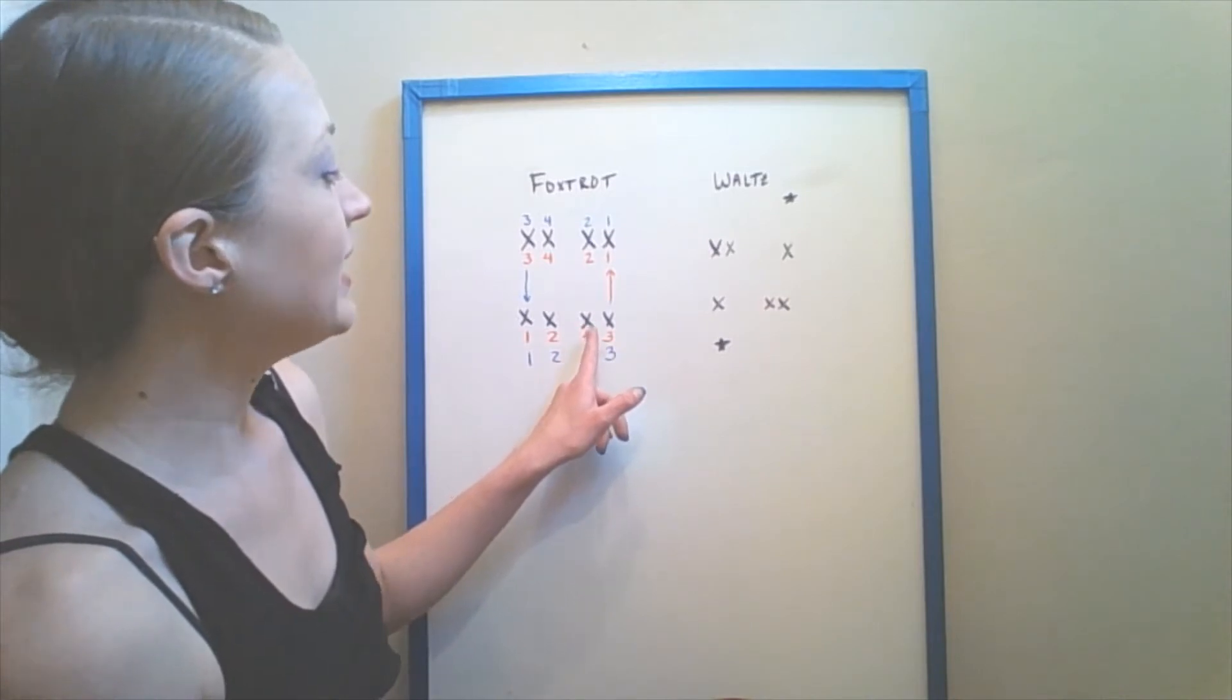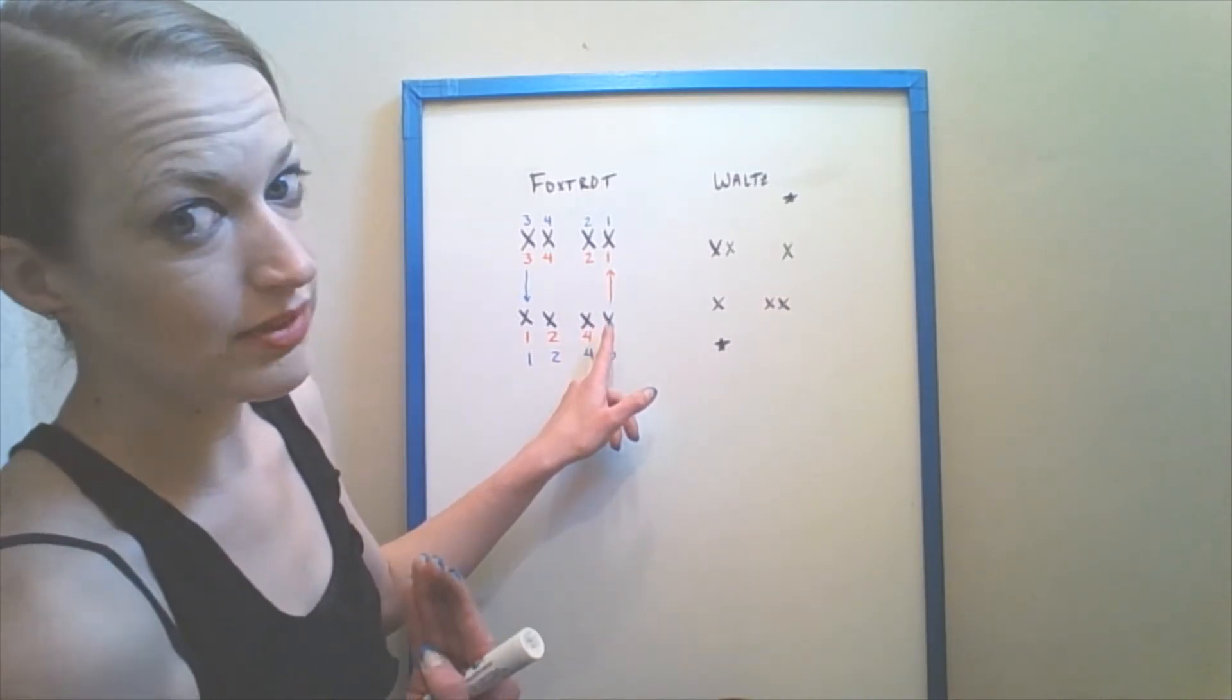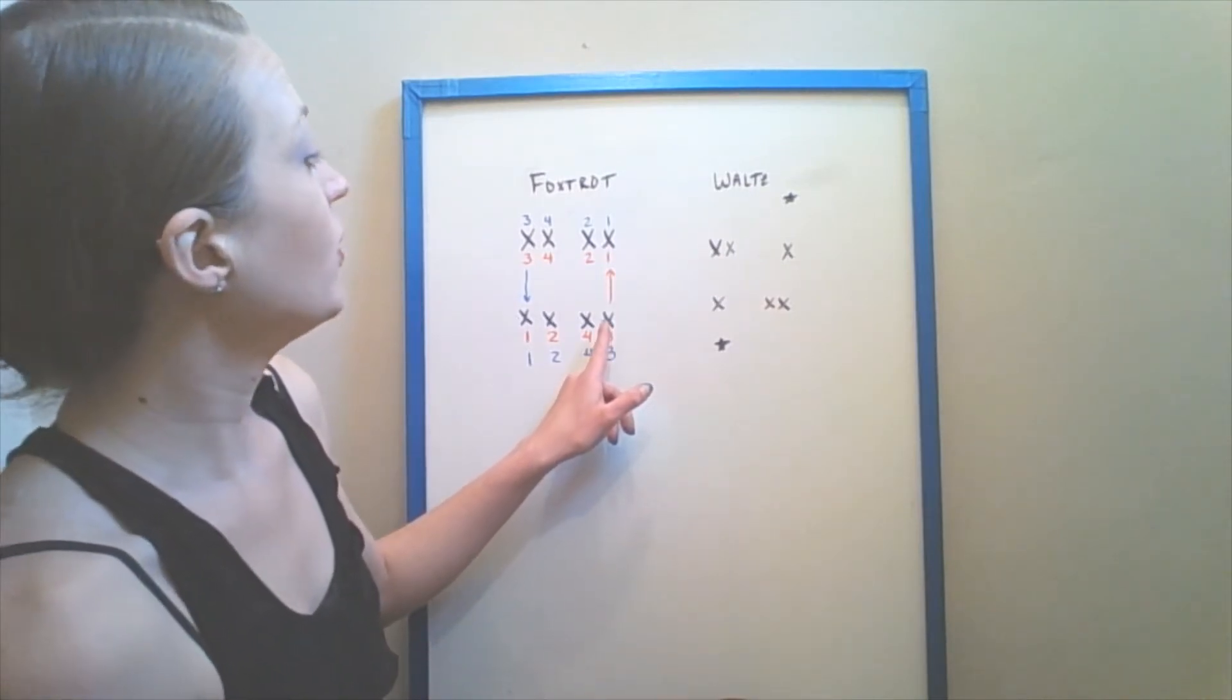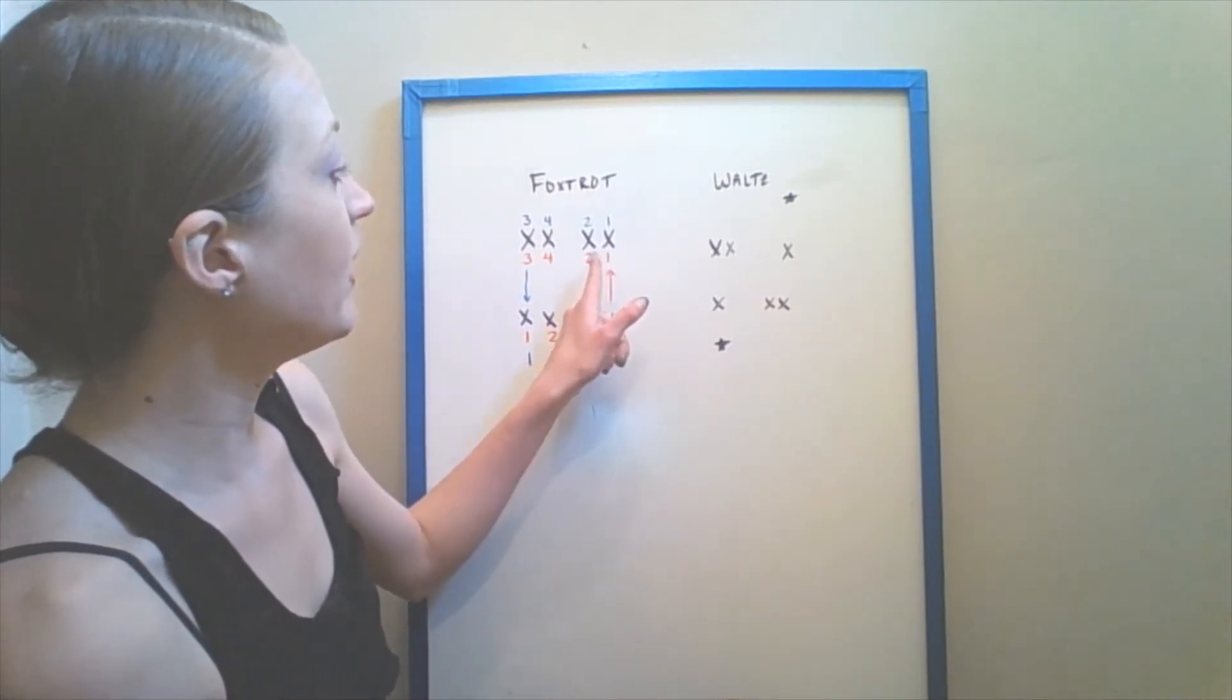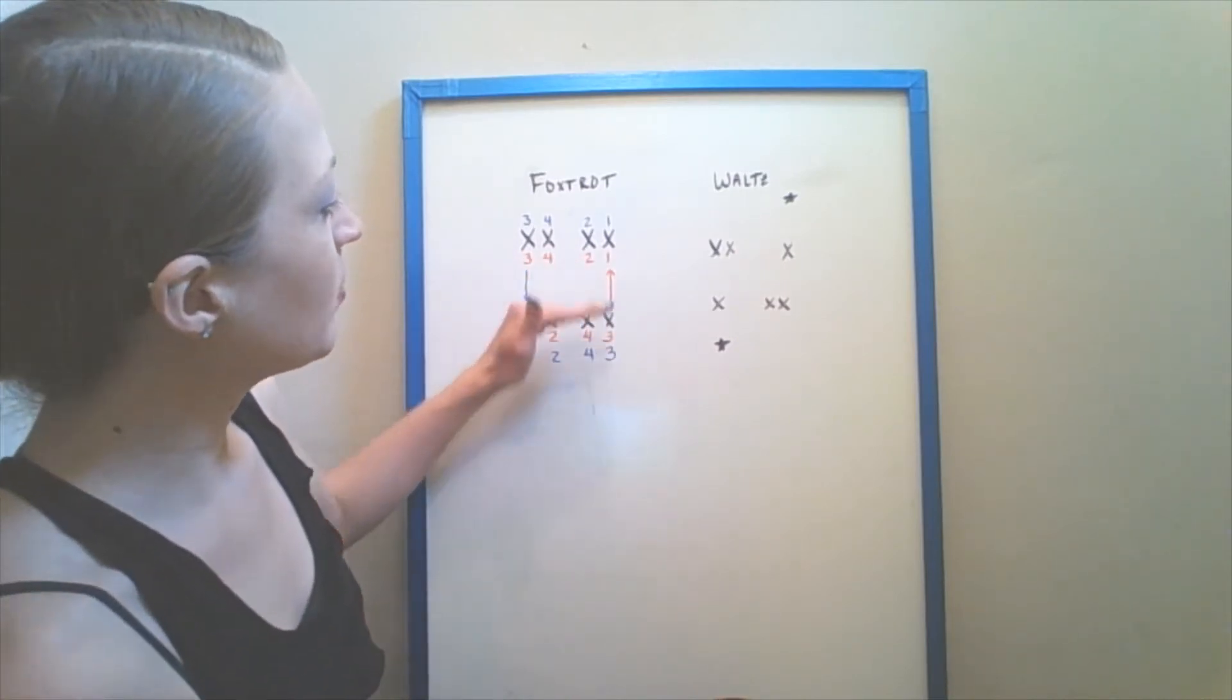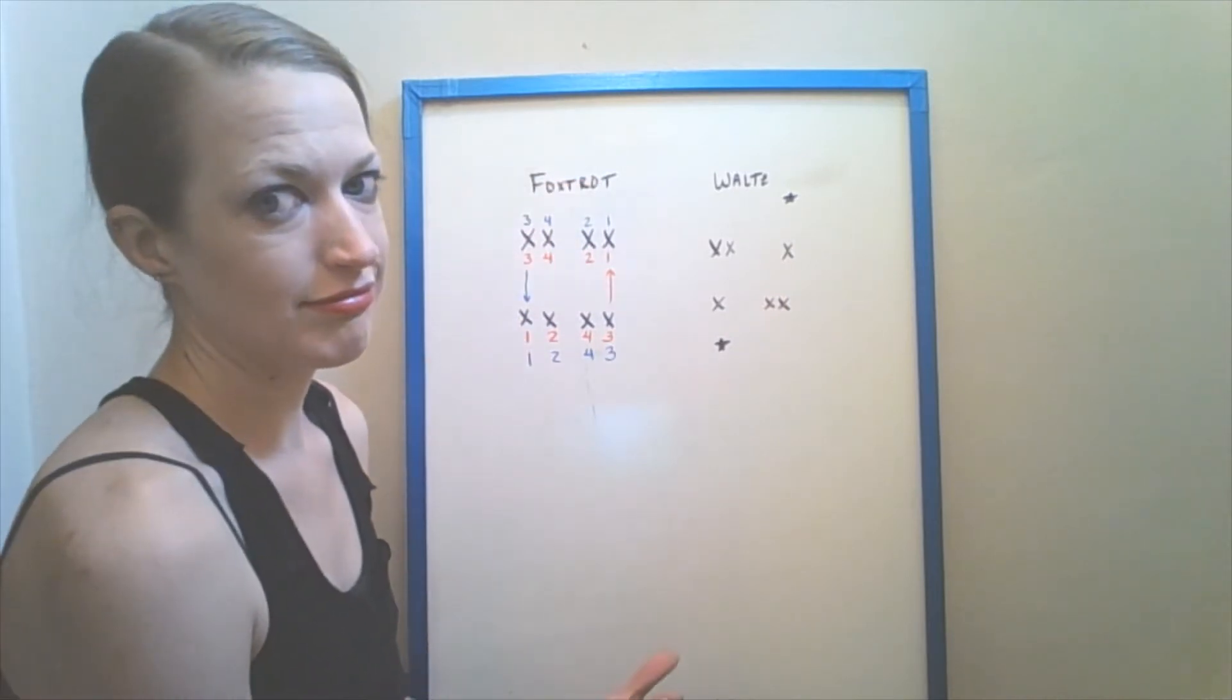From there, we take our right foot, and instead of going backwards like we did for the box step, we're using our right foot to now move forward. Your right foot steps forward one, left foot together on two, you step side three, four. So that way you're moving forward across the dance floor.